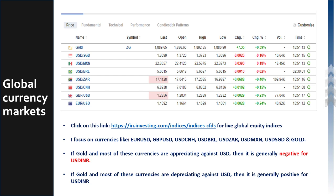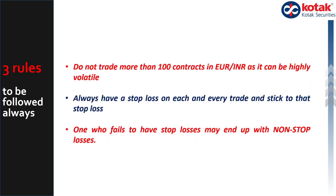These three things help me form a view on the dollar rupee. Having formed a view on both Euro dollar and dollar rupee, I am now ready to take a trade — whether to buy, sell, or avoid on the Euro INR. Whenever you trade the Euro INR, three rules must always be adhered to: first, do not exceed 100 contracts; second, always have a stop loss and stick to it; and third, one who fails to have a stop loss may end up with unlimited losses. With this, I'm signing off — have a fantastic day ahead.